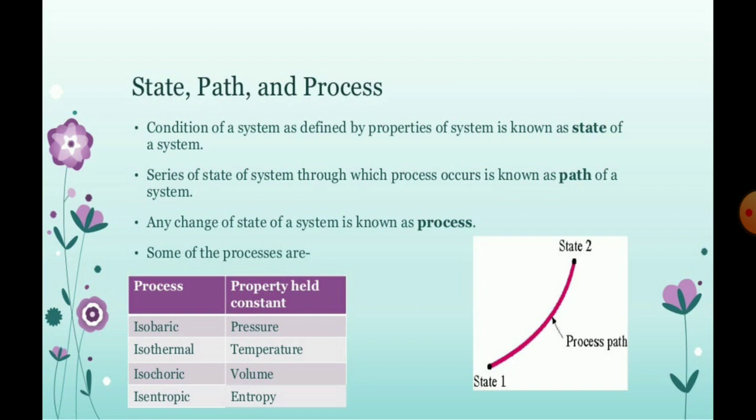State, path, and process: if the condition of the system is defined by properties of the system, then it is known as the state of that particular system. The series of state systems through which the process occurs is known as the path of the system, and any change of the state of the system is known as the process. Some of the processes running from 1 to 2 is the process path.